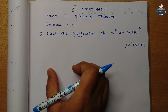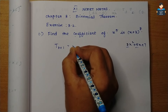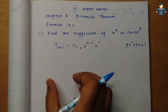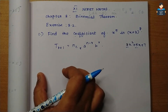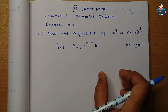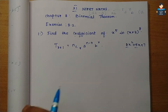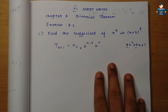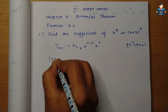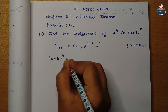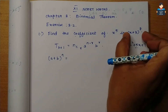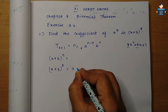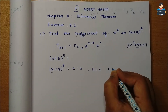So the general term T(r+1) is equal to nCr · a to the power (n−r) · b to the power r — this is the binomial theorem formula. For the given equation (x + 3)⁸, the value of a is x, b is 3, and n is 8.